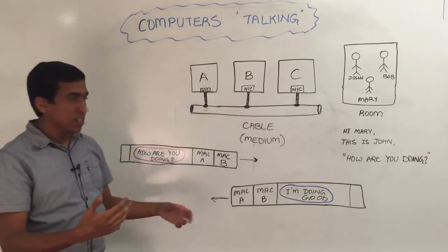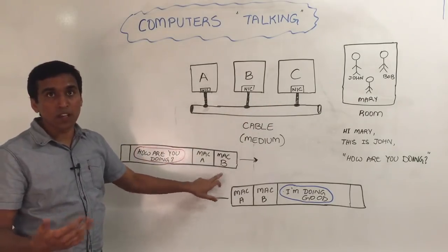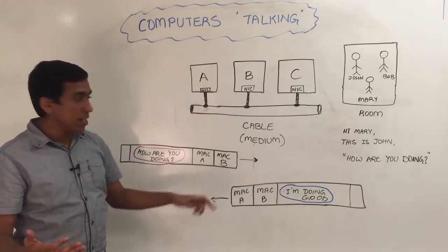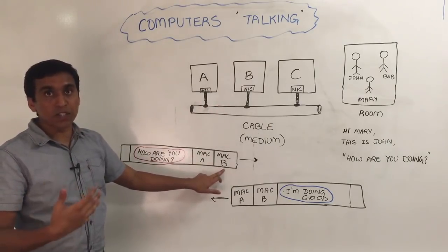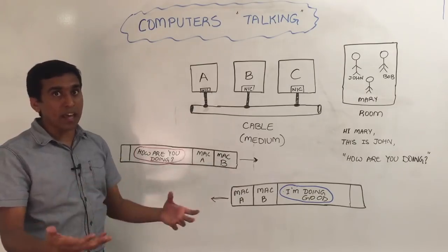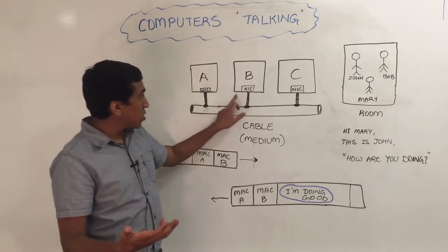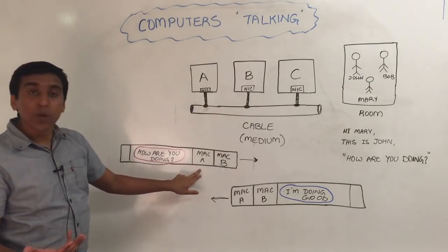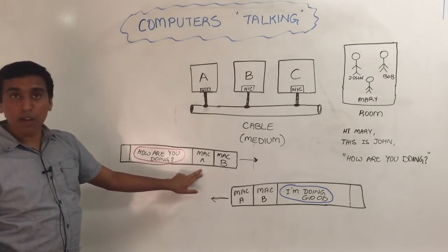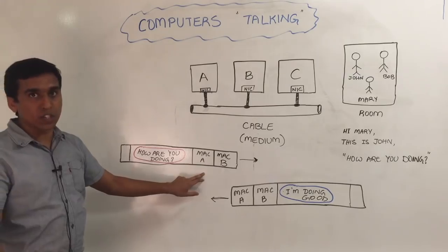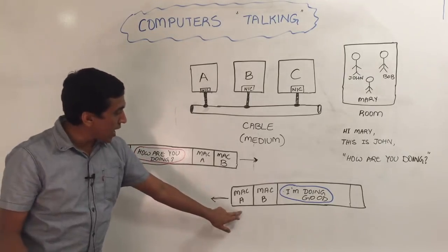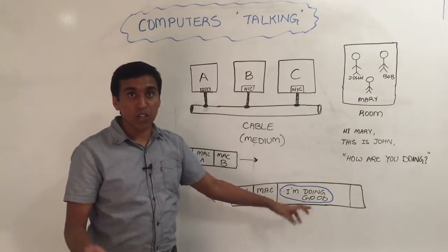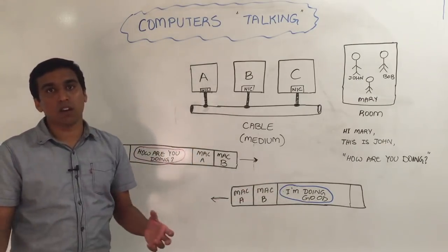What happens is when C looks at this message, it sees that it's addressed to B. So it just silently ignores it. And B, when it gets this message, it sees that this message is addressed to me. So let me reply. And when it decides to reply, what B does is, I want to know who is talking. So it looks at the original message and sees, oh, it's A who is talking. So it says, hey A, this is B, and the actual message, I'm doing good. That's how computers talk.